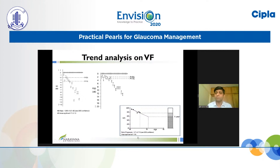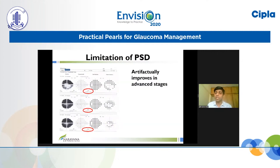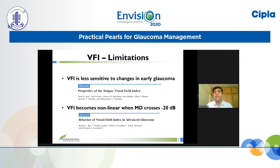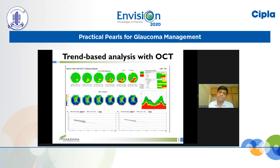However, these global indices on visual fields have their own limitations. Cataract and other causes of generalized depression affect the mean deviation; PSD artifactually improves in advanced stages; and VFI is less sensitive than mean deviation in early disease, with its linearity assumption broken in advanced stages. Trend-based analysis with OCT evaluates the average RNFL or GCC thickness measurements over time, and the rate of change of these parameters is given with statistical significance. Here is an example showing both RNFL and GCC thinning over time, with both changes being statistically significant.